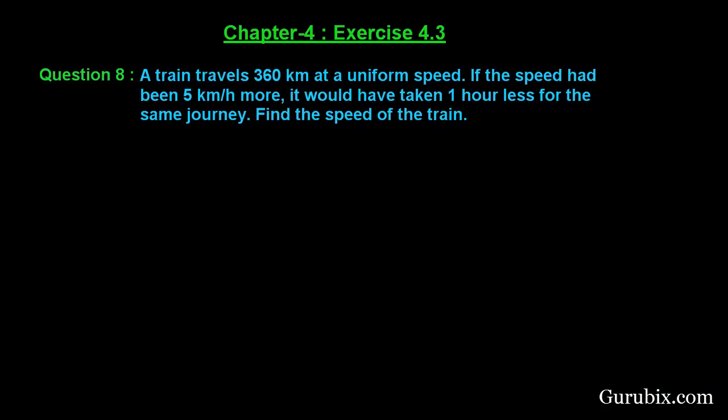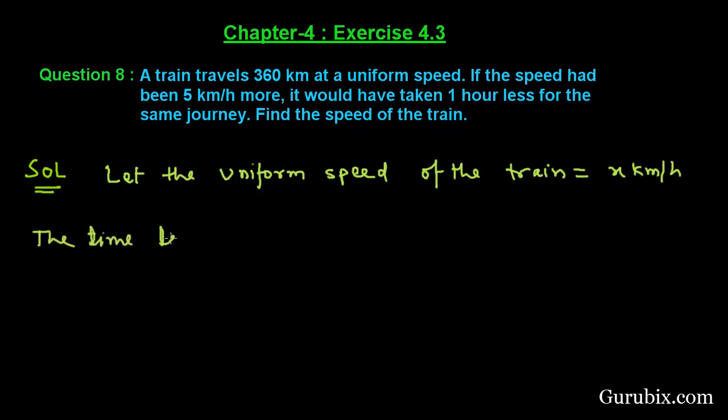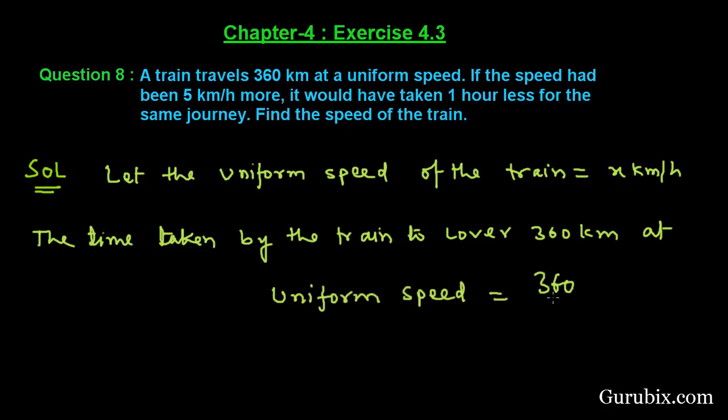Let us see how to solve this question. Let the uniform speed of the train be x km per hour. The time taken by the train to cover 360 km at a uniform speed would be 360 over x hours, because distance over speed